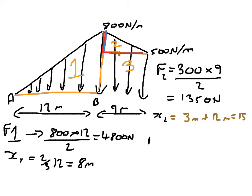And then, my force 3 is just simply going to equal 500 times 9. Whoops. Not 5 times 9. 500 times 9, which is going to equal 4,500.